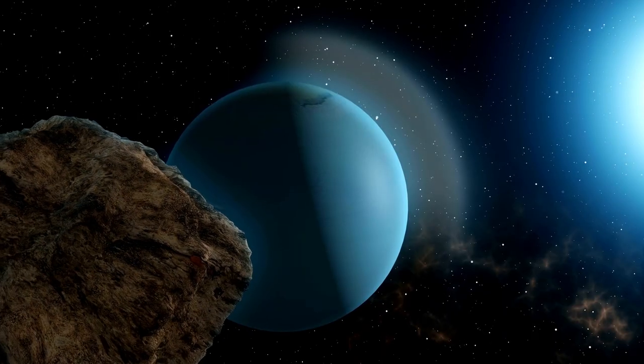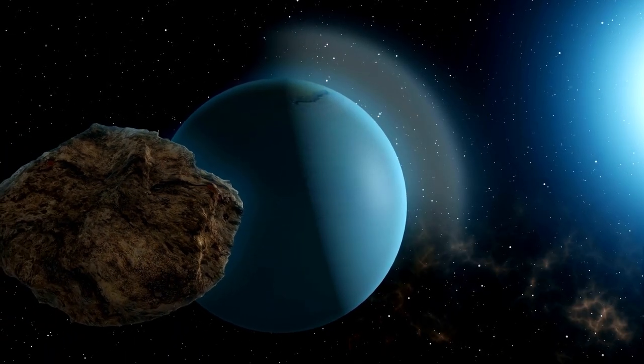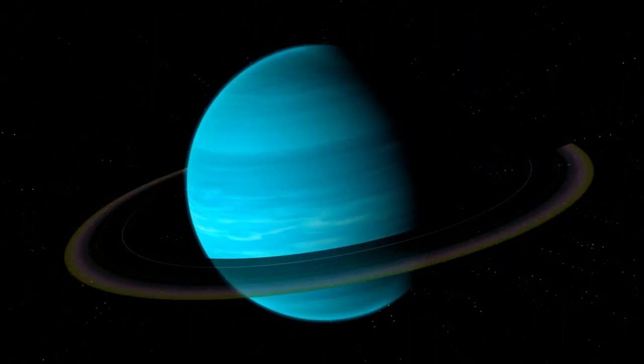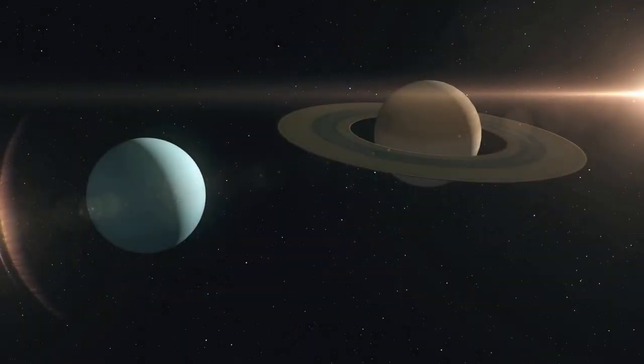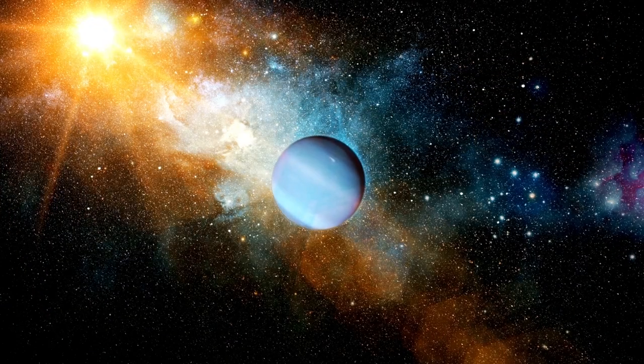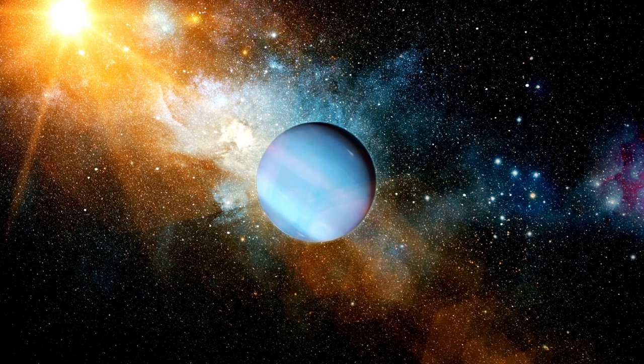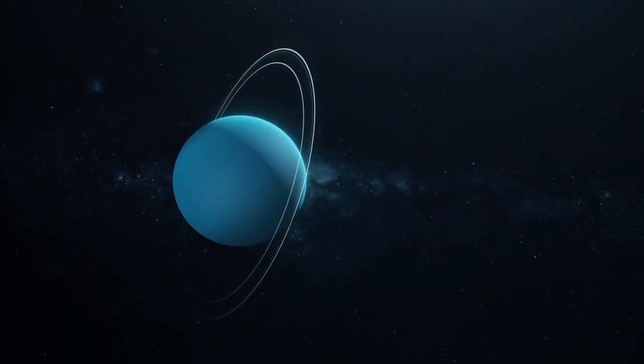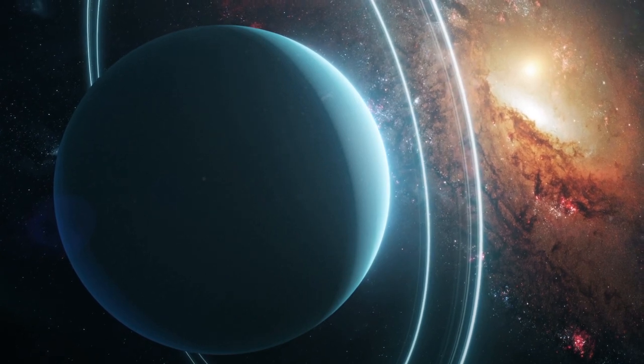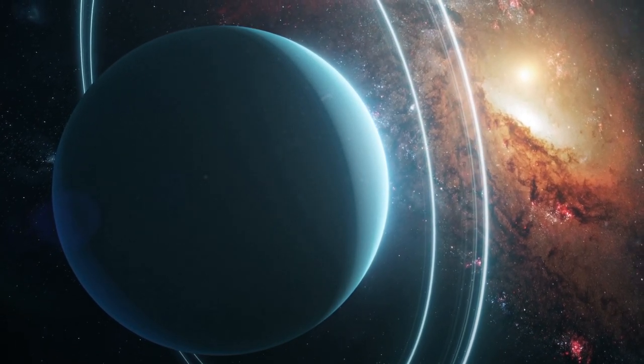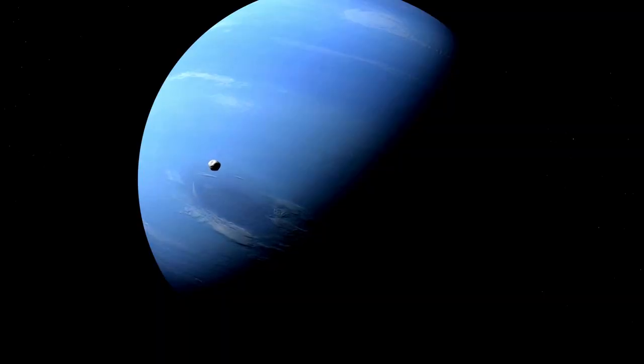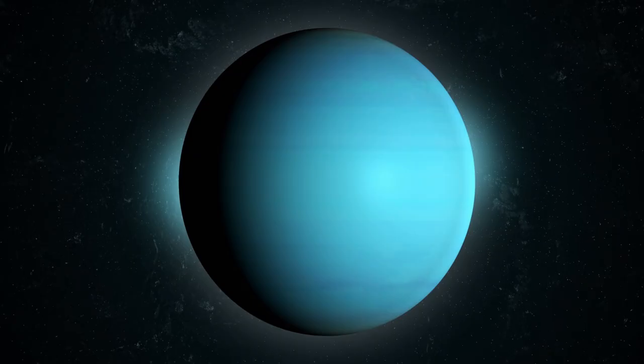Uranus is one of two ice giants in the outer solar system; the other is Neptune. Most, 80% or more, of the planet's mass is made up of a hot, dense fluid of icy materials: water, methane, and ammonia above a small rocky core. Near the core, it heats up to 9,000 degrees Fahrenheit or 4,982 degrees Celsius. Uranus is slightly larger in diameter than its neighbor Neptune, yet smaller in mass. It is the second least dense planet; Saturn is the least dense of all.